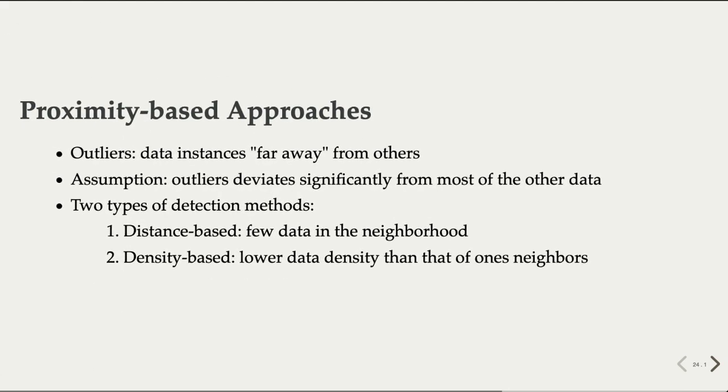Another category of outlier detection methods are based on data proximity, their distances from one another and data density of their neighborhoods. The assumption here is that outlier data deviate significantly from other data, either because they are far away from others or their neighborhood density is very different from others.